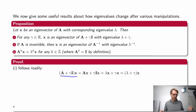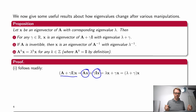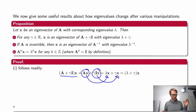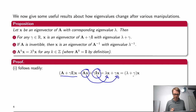Let's prove these three propositions. For the first one, we compute (A plus gamma I) times x, which equals A times x plus gamma times x. Since x is an eigenvector of A with eigenvalue lambda, A times x equals lambda times x. So (A plus gamma I) times x equals lambda x plus gamma x, which equals (lambda plus gamma) times x. That means lambda plus gamma is the eigenvalue of (A plus gamma I).